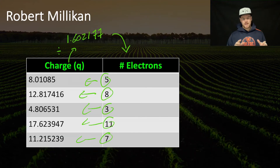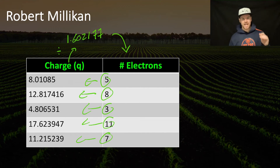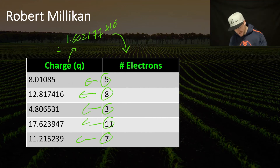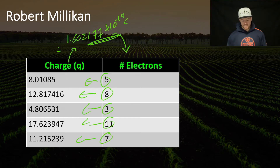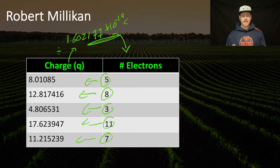Hopefully that makes more sense of this data. These values are times 10 to the negative 19 Coulombs. We've seen this number before — we usually just write it on our data sheet as 1.6 times 10 to the negative 19.